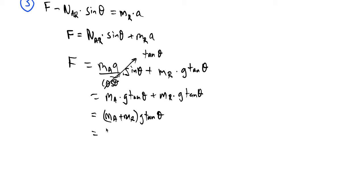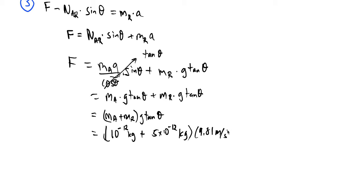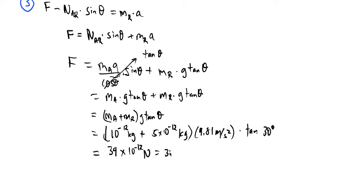Substituting the values: the amoeba is 1 nanogram = 1×10⁻¹² kg, the ramp is 5×10⁻¹² kg, g = 9.81 m/s², and the angle is 30 degrees. That gives an answer of approximately 34×10⁻¹² newtons, which is 34 piconewtons.